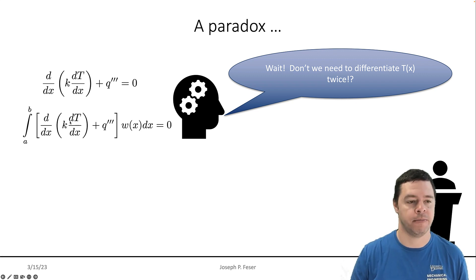So we have two derivatives here. I have a dt/dx and then I have a d/dx over here. That implies I need to be able to take two derivatives of whatever approximation I have of t of x, right.